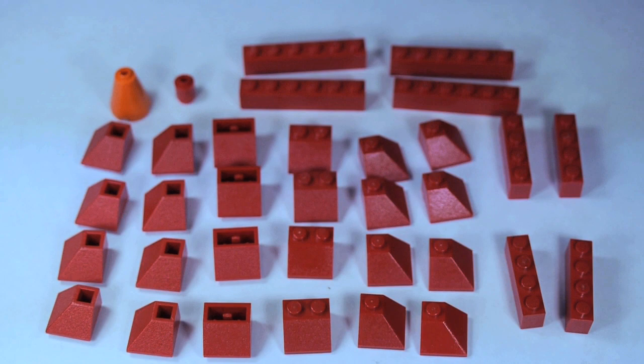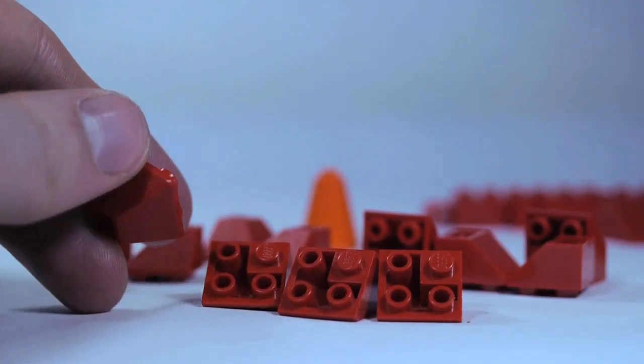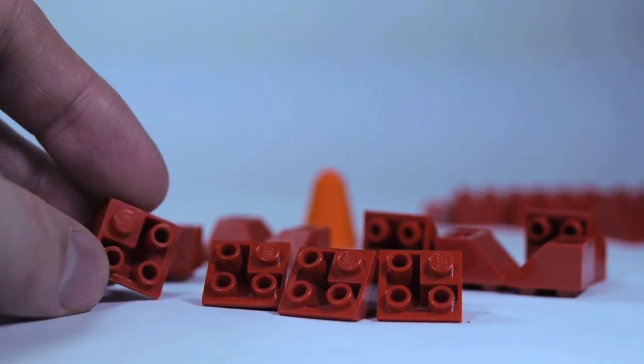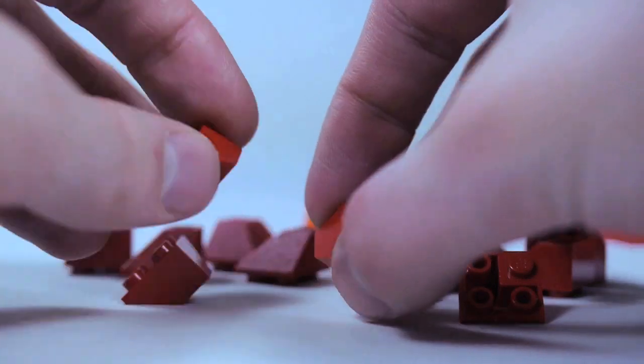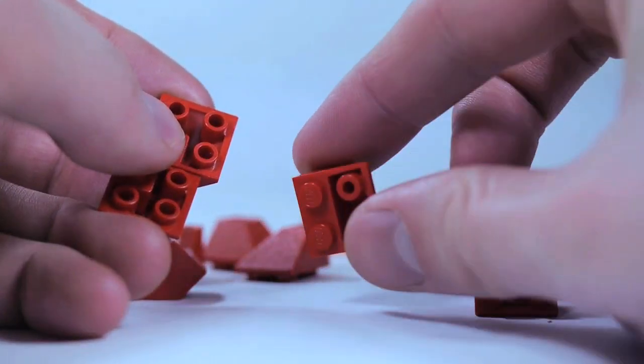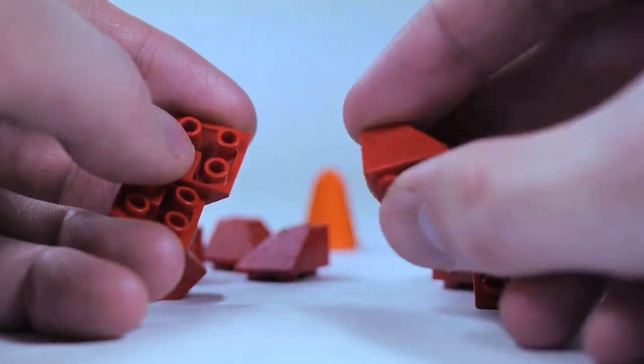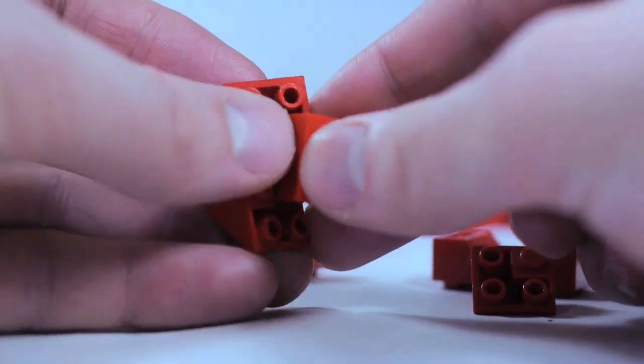These are the pieces you're going to need to build Tingle's balloon. So we're going to start with these red upward two-by-two corner slopes. You're going to need eight of those in total. And then we're also going to use some just regular two-by-two upward slopes, non-corner, four of those.